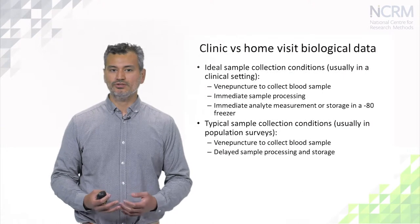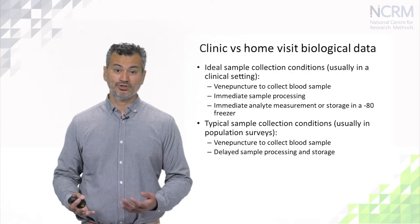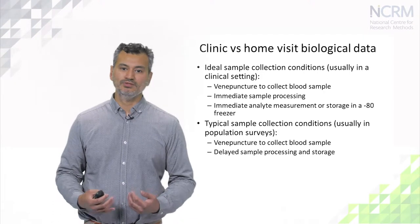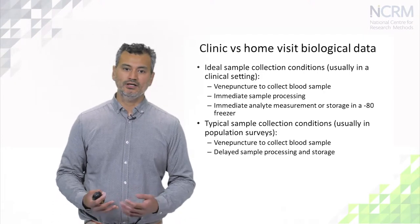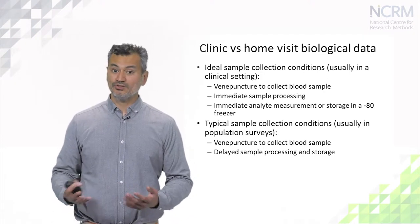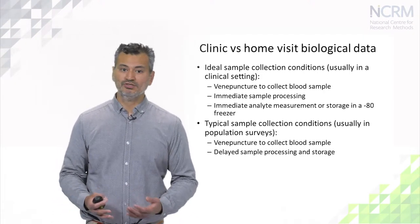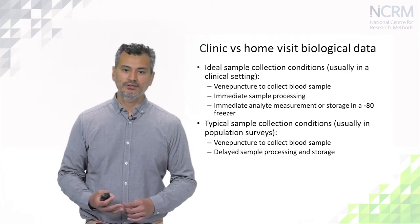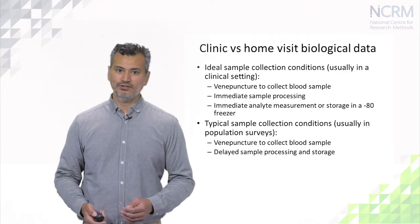The other way of collecting biomarkers, or blood-based biomarkers, is when participants are visited at home and their blood samples are collected and then posted to a laboratory. That's the case with Understanding Society, the Southampton Women's Study, the 1946 birth cohort study when the participants were aged 53, the Health Survey for England, and the English Longitudinal Study of Ageing.